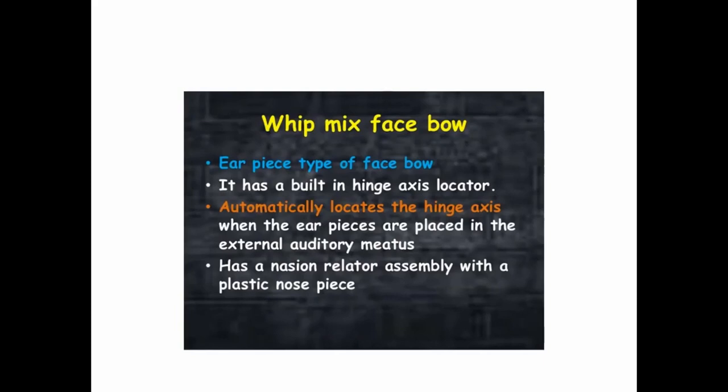The Whip Mix facebow is another type of earpiece facebow. Its specialty is that it has a built-in hinge axis locator — meaning it automatically locates the hinge axis when the earpieces are placed in the external auditory meatus. It also has a nasion relater assembly with a plastic nosepiece, which is the specialty of this advanced type of facebow.